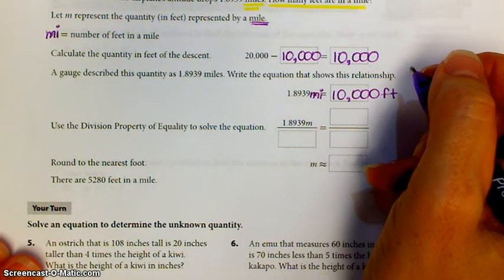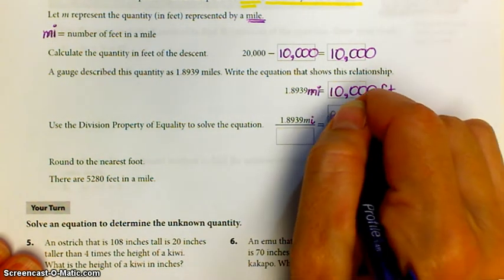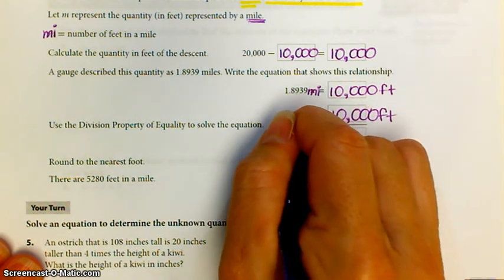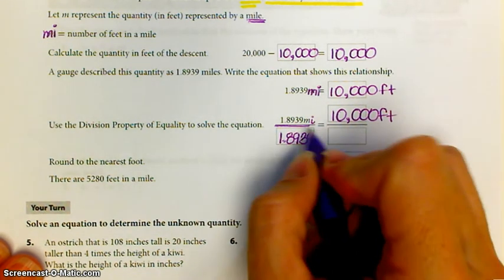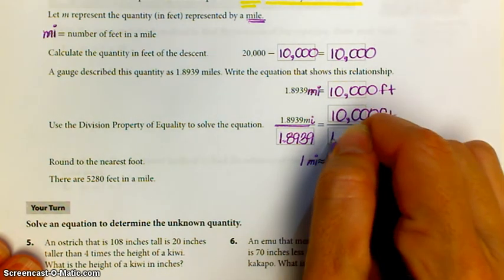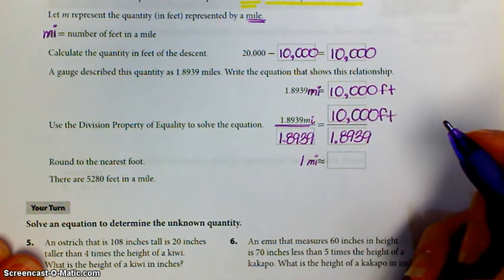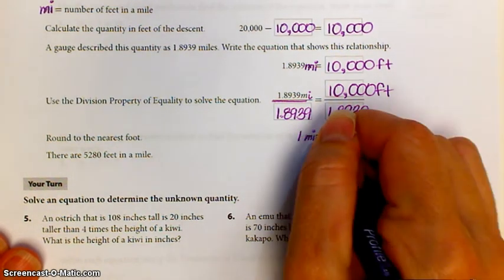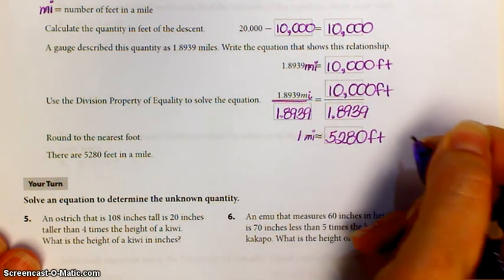I'm going to use the division property of equality. Divide both sides by 1.8939, so that over here you'll wind up with just one mile. Over here, divide by 1.8939, and when you crunch those numbers, 10,000 divided by 1.8939, you get that one mile is approximately equal to 5,280 feet.